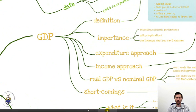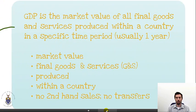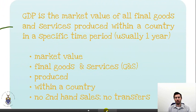So what is GDP? Why is it important? There are two ways of measuring it: an income approach and an expenditure approach. We will look at the difference between real GDP and nominal GDP, then talk about some shortcomings when it comes to using GDP. GDP is the market value of all final goods and services produced within a country in a specific time period, usually one year.